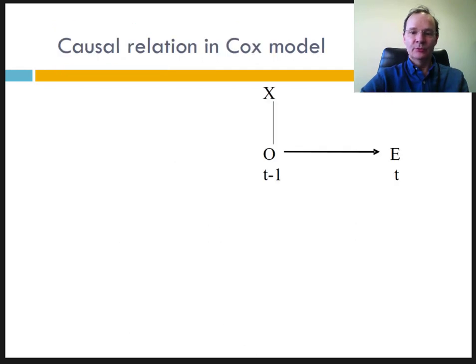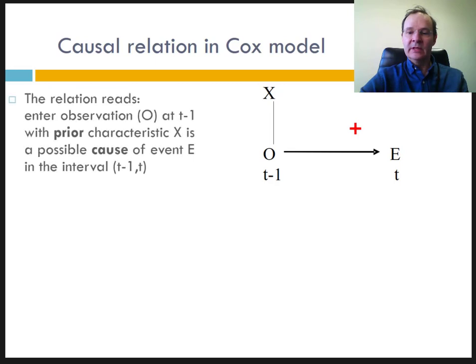From the causal relation point of view, the only explanatory element in this minimal model is the entry of the individual into the population subject to the risk, with such or such characteristics. The relation reads: entry into observation O at time t-1, with x being a possible cause of the occurrence of event E in the interval t-1 to t. This representation follows the principle of the anteriority of the cause x on the effect e.